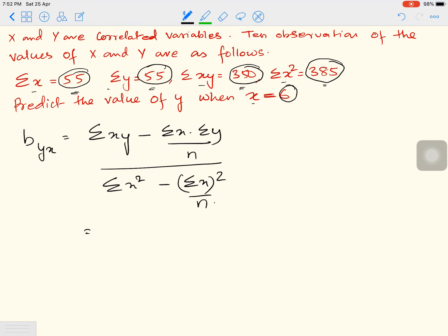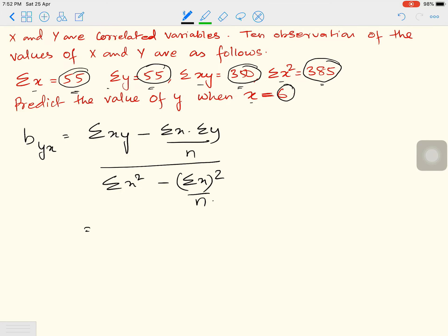Let's put the values in place. Sigma XY is 350, minus 55 into 55 divided by 10 because there are 10 observations, divided by Sigma X squared is 385 minus 55 whole squared divided by 10.